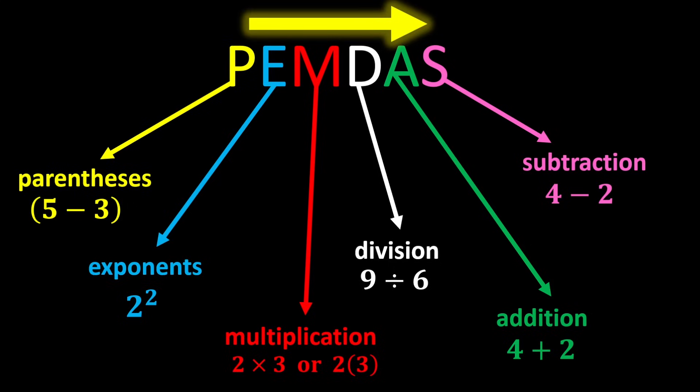Multiplication and division have equal priority, so whenever both appear in an expression, move from left to right and perform whichever you reach first. This rule also applies to addition and subtraction.